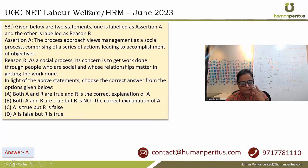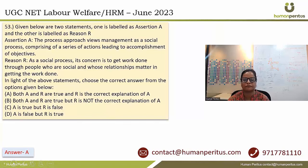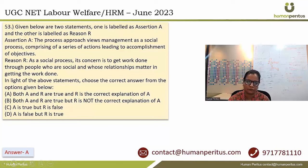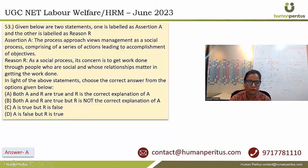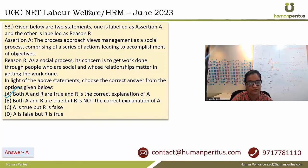Question 53: The assertion says the process approach views management as a social process comprising a series of actions leading to accomplishment of objectives, because as a social process its concern is to get work done through people whose relationships matter. Both A and R are true and R is the correct explanation of A. Answer is option A.